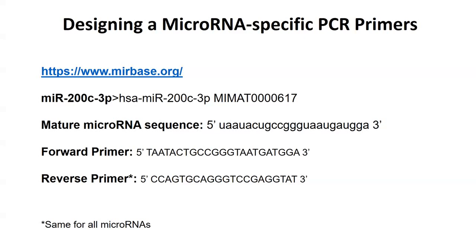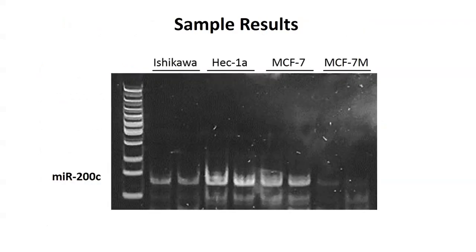To recap: once you design your primers, synthesize your cDNA specific to your microRNA, and conduct your polymerase chain reaction, you run those products out on a 10% acrylamide gel — stained with SYBR Gold and visualized using a UV box, blue light box, or gel doc system. You should see bands around 75 base pairs, so make sure you use a low molecular weight DNA marker. This will allow you to see the relative expression of endogenous microRNAs in your cells.